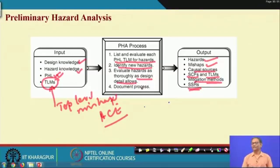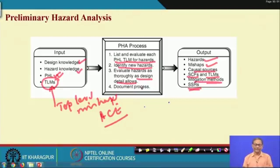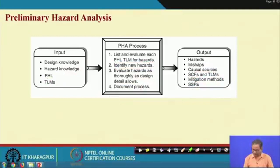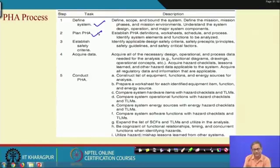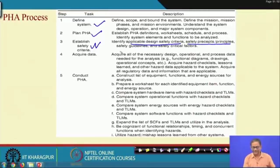PHL and PHA processes are intertwined and overlap, but PHL helps you do PHA in a better manner. Sometimes we do not do PHL separately — we start from the first step and complete both together. The steps include: define system, plan, and establish safety criteria.